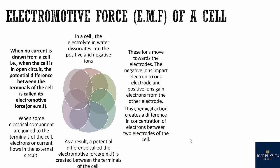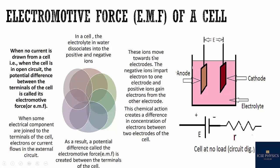What is the EMF of a cell? In a cell, the electrolyte in water dissociates into positive and negative ions. These ions move towards the electrodes. The negative ions impart electrons to the electrode and the positive ions gain electrons from another electrode. This chemical reaction creates a difference in concentration of electrons between the two electrodes of the cell.